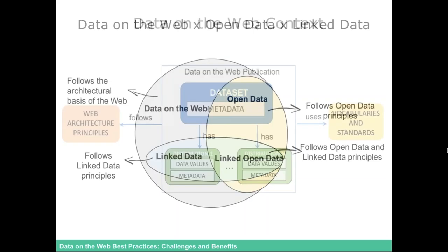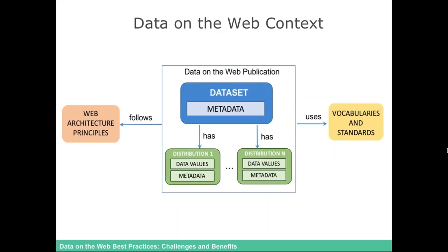This is the first figure you'll see in the Data on the Web Best Practices document, because it gives us the context about data on the web. If we think about data on the web, we first have to think about a dataset and metadata. It's very important that we think about the web architecture principles — it must follow these principles — and also it must use vocabularies and standards.